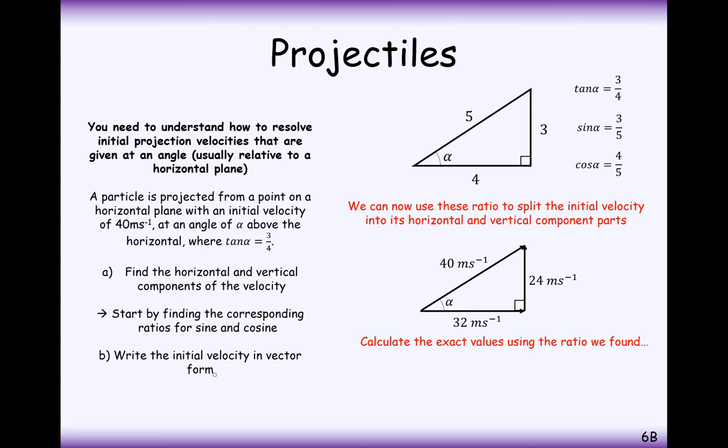The next part is to write the initial velocity in a vector form, so that's going to be 32 on the horizontal component, that's 32i, and 24 on the vertical component, so that is 24j. So 32i plus 24j all in brackets and then meters per second as the units.